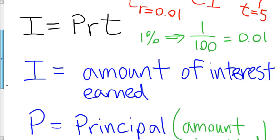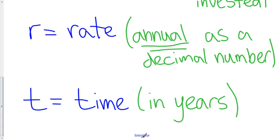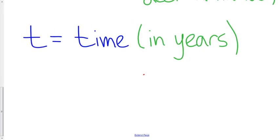So I have all my values. The formula is I equals PRT. I'm going to plug in all of those numbers.